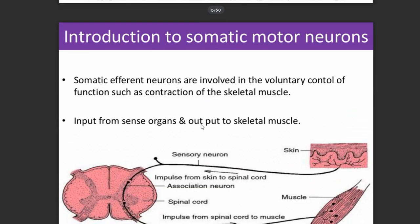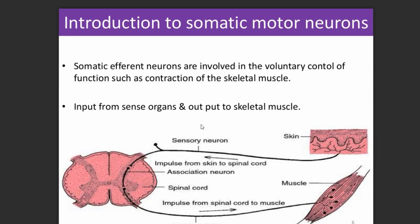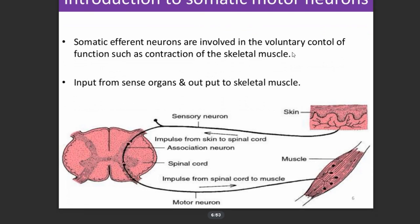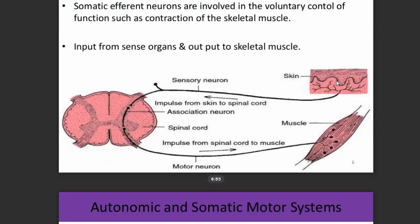The somatic motor neurons control the movement of our skeletal muscles, meaning they are voluntary in nature. Somatic efferent neurons are involved in voluntary control of functions such as contraction of skeletal muscles, and all skeletal muscles are innervated by this type of neuron. Somatic motor neurons receive input from sense organs and send output to skeletal muscles. For example, a sensory neuron receives a stimulus applied on the skin.